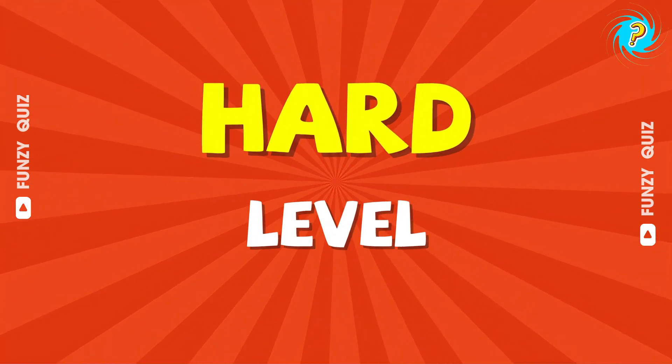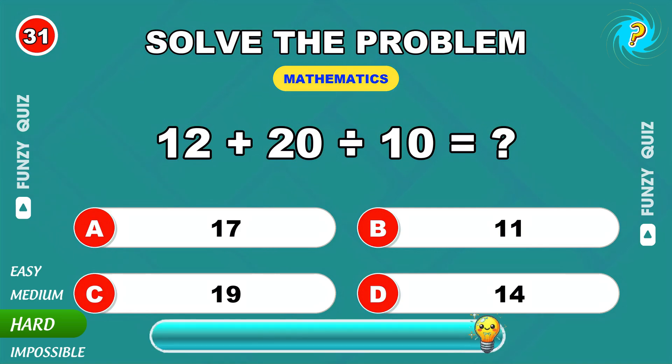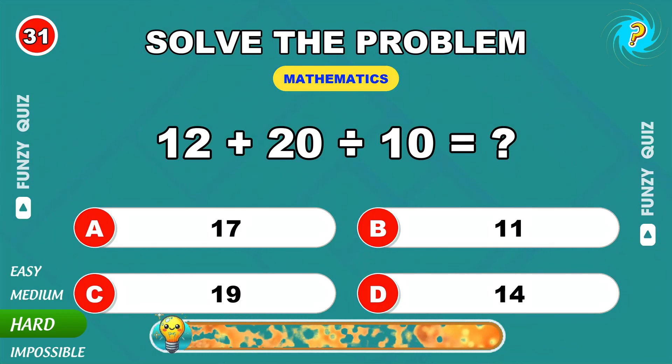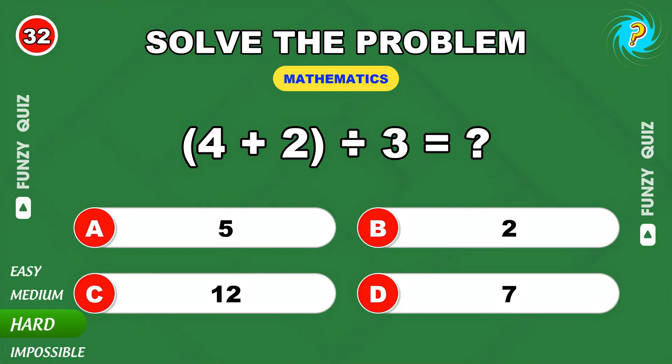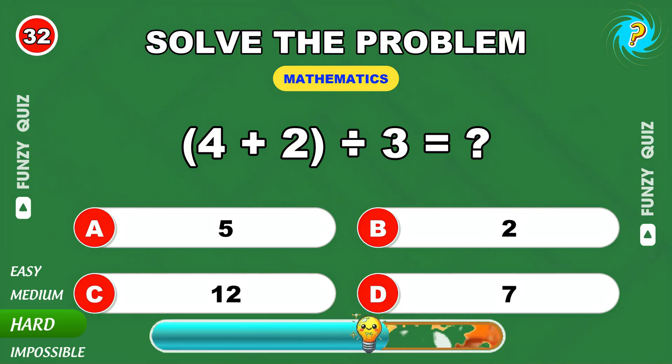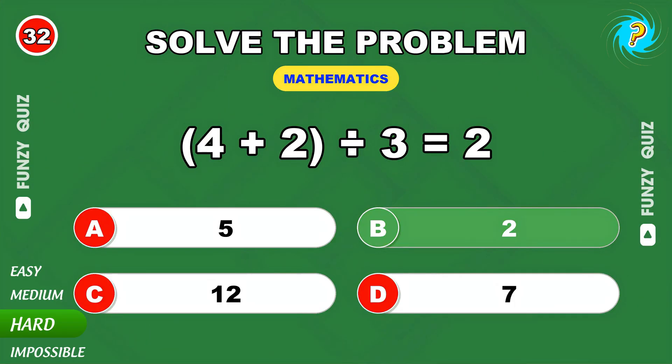This is the hard level, time to shine. 12 plus 20 divided by 10. 14. 4 plus 2 all divided by 3. The result is 2.